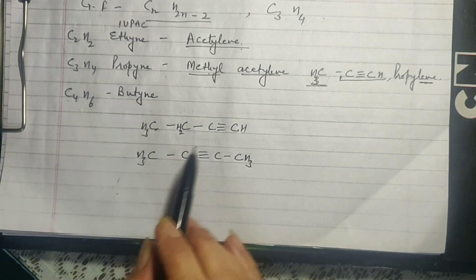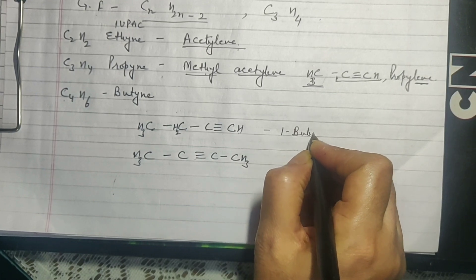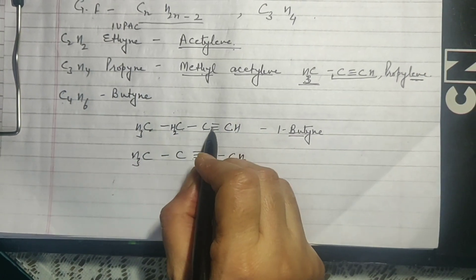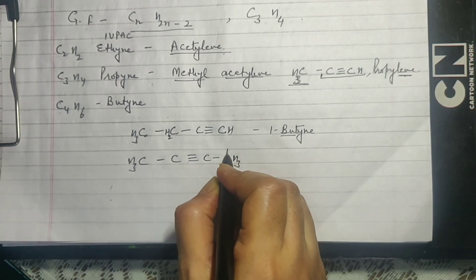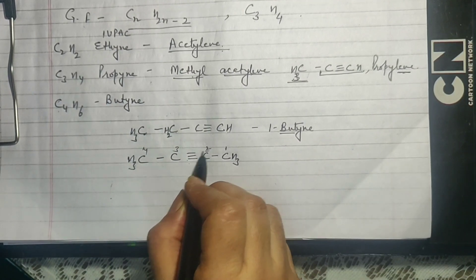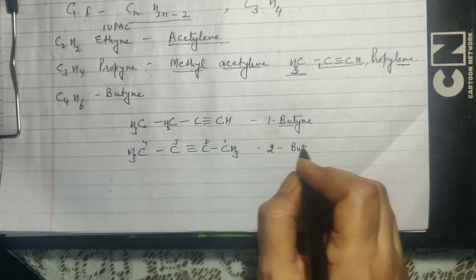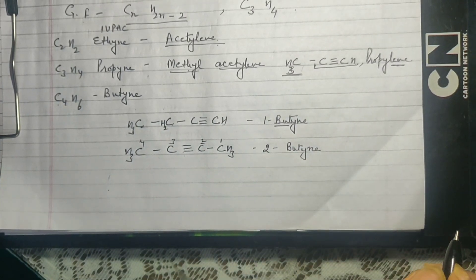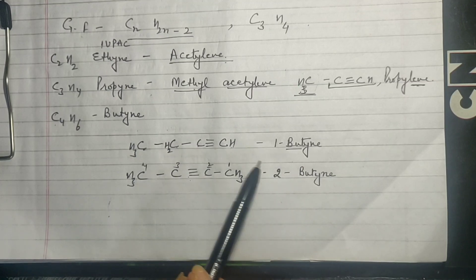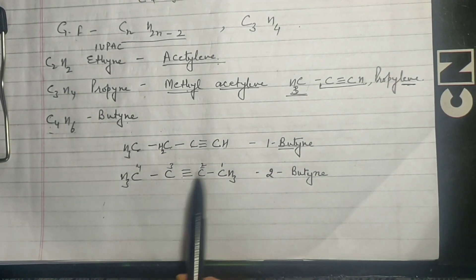Both structural isomers of Butyne have the same molecular formula C4H6, but only the placement of the triple bond is different. When the triple bond is at position 1, you call it 1-butyne — 'but' because there are four carbon atoms and '-yne' because of the triple bond. When the triple bond is between carbon atoms 2 and 3, the smaller number gives us 2-butyne. If you are given just the molecular formula, you can simply call it butyne without specifying the position.